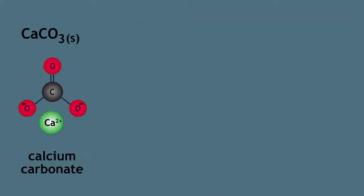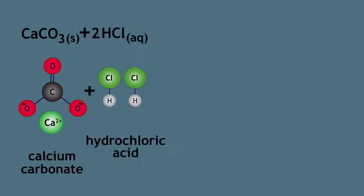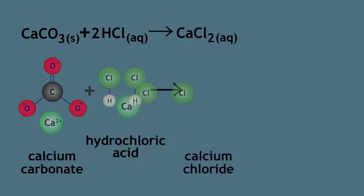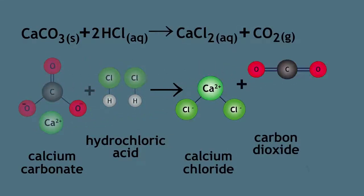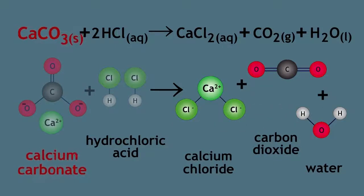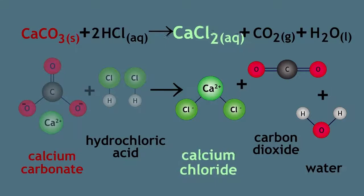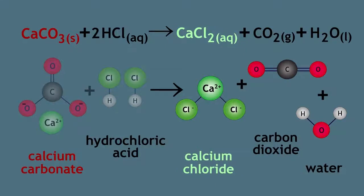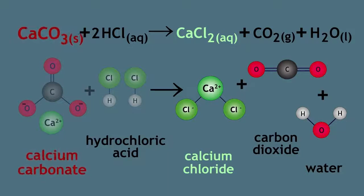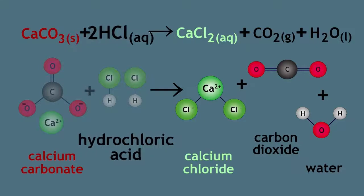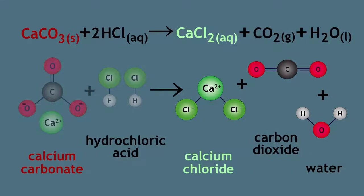Calcium carbonate reacts with hydrochloric acid to give calcium chloride, carbon dioxide, and water. So calcium carbonate appears to dissolve, but calcium chloride has been formed and it is soluble in water. Note that in this reaction and in the acid rain example in the introduction, calcium carbonate reacted with acid to give carbon dioxide and water.